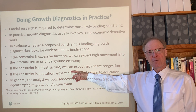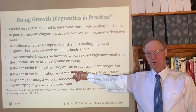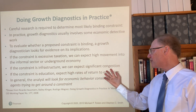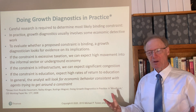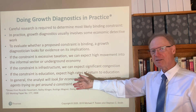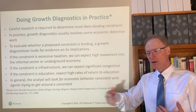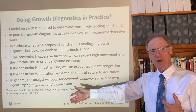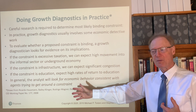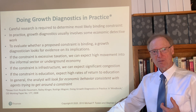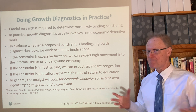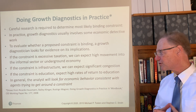Maybe the constraint is infrastructure — that was another of the final boxes we looked at. If this is the case, you ought to be able to observe congestion: lots of backups on highways, lots of bottlenecks, and it's just taking far too long to get from point A to point B. If you don't see that, it becomes difficult to make the case that infrastructure is your binding constraint.